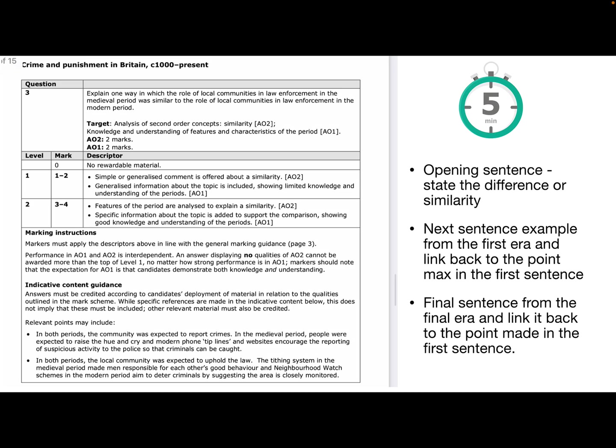So your opening sentence then needs to state the difference or similarity depending upon what's in the question. The next example is from the first era identified in the question and you're going to link it back to the point made in your first sentence. Then the final sentence from the final era and link it back to the point made in that first sentence there again. So the ones that they might have included here in both periods, the community was expected to report crimes. In the medieval period, people were expected to raise the hue and cry. And the modern phone tip lines and websites encourage reporting a suspicious activity to the police so that criminals can be caught. In both periods, the local community expected to uphold the law. Tithing system in the medieval period made men responsible for each other's good behaviour. Neighbourhood watch schemes aimed to deter criminals by suggesting the area is closely monitored. So it should be five minutes maximum on that question following that structure.